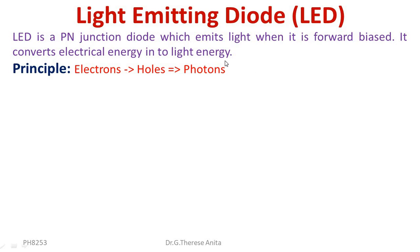The principle of LED is the injection of electrons from the N region into the P region, which makes a direct transition from the conduction band to the valence band. The electrons recombine with holes and emit photons.